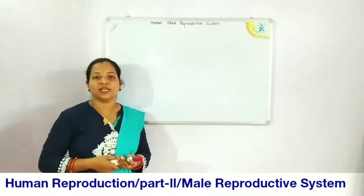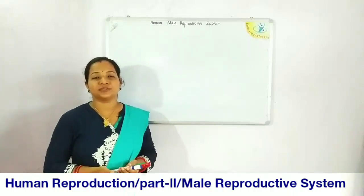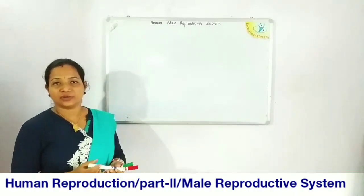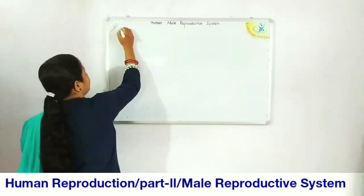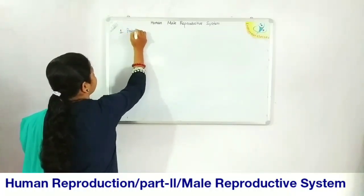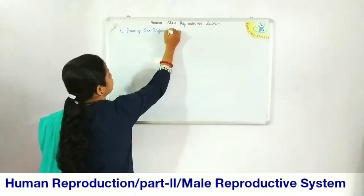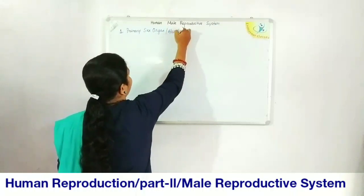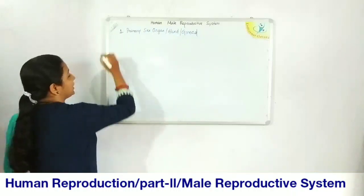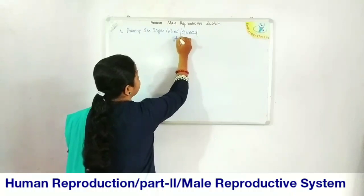Here we are going to discuss the human male reproductive system. The male reproductive system constitutes certain organs, which can be studied under some headings. The first heading is the primary sex organ, or primary sex gland, also called the gonad — specifically the male gonad — under which we study a pair of testes.